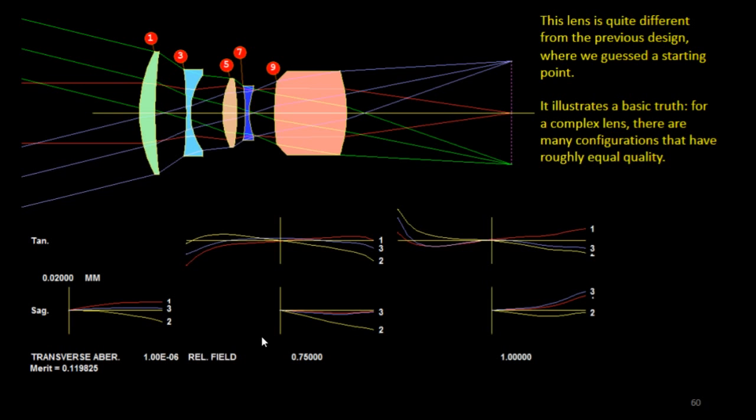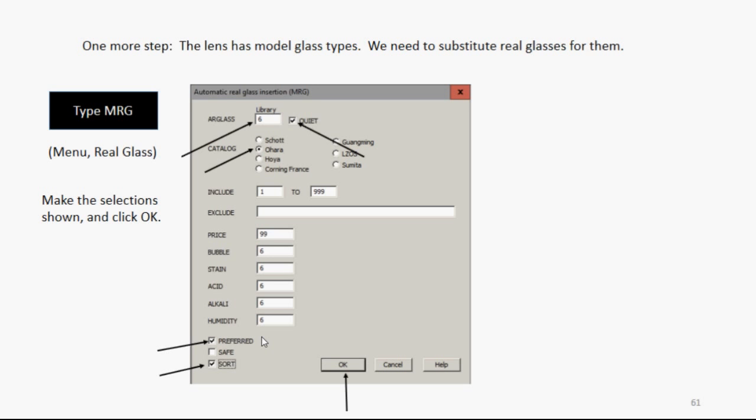Then we'll run it and anneal it. And now this is what comes back. A rather good lens. And this illustrates a basic truth. For any complex design, there are usually many different solutions that have almost the same quality. So you can't really say you're going to find the best solution. What you want to do is find a very good solution.